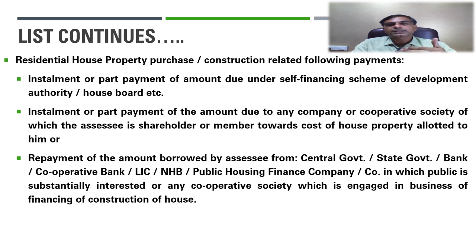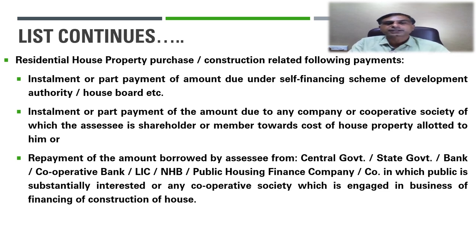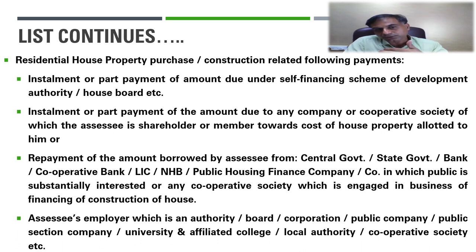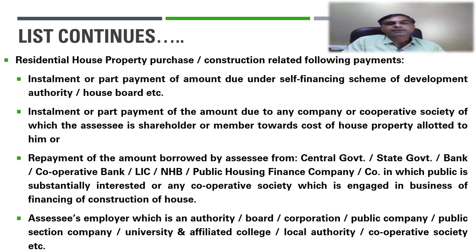Repayment of amounts borrowed from central government, state government, cooperative society, cooperative bank, LIC, National Housing Bank, public housing finance company, or a company in which the public is substantially interested is allowed. Also, borrowings from a cooperative society engaged in financing construction of houses and from the assessee's employer — whether an authority, board, corporation, public company, public sector company, university, affiliated college, local authority, or cooperative society — qualify under Section 80C.